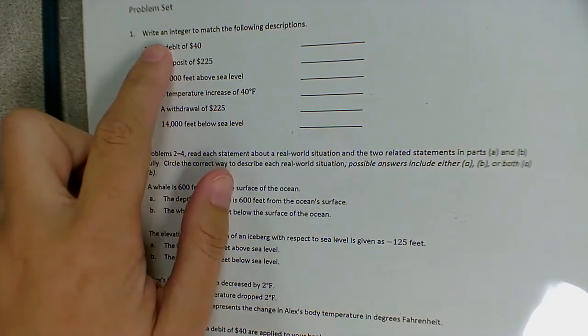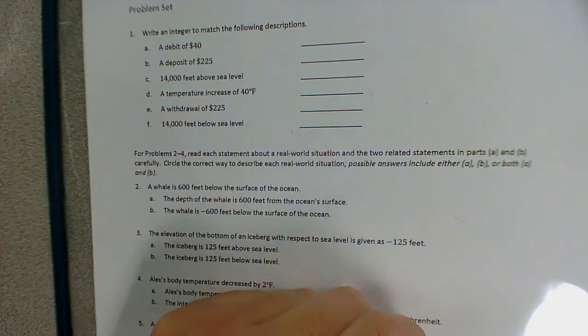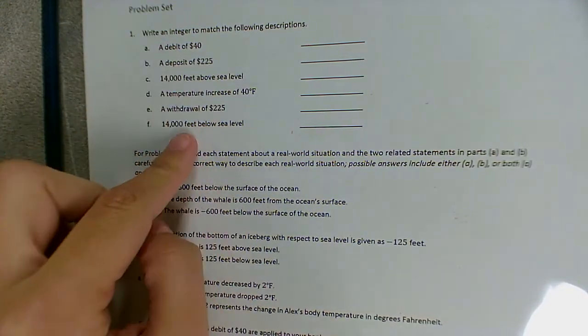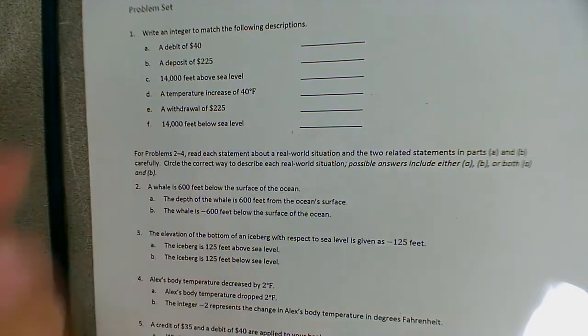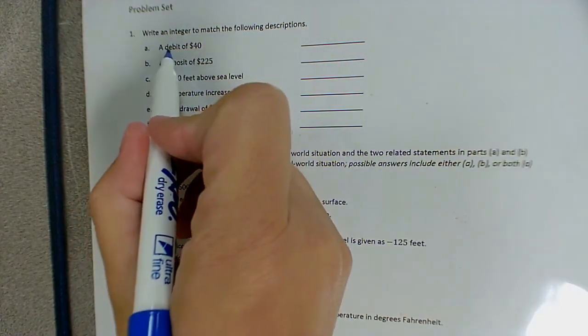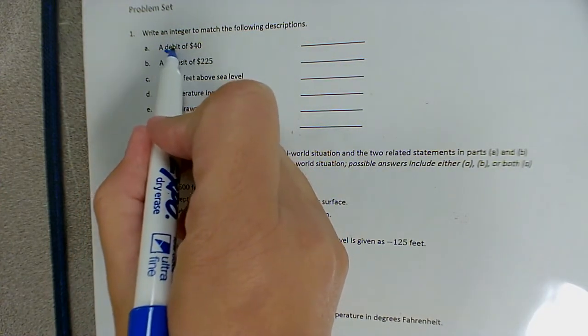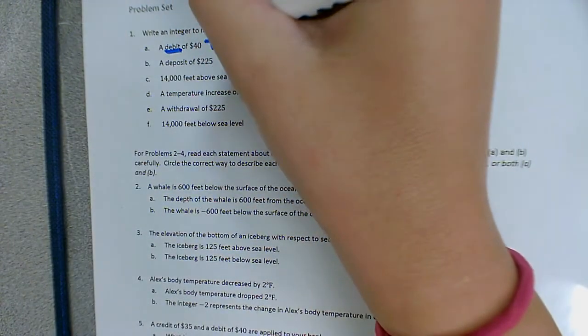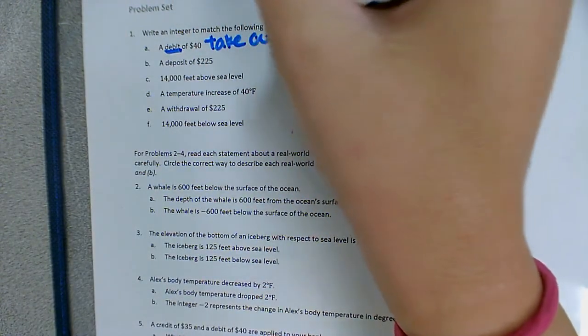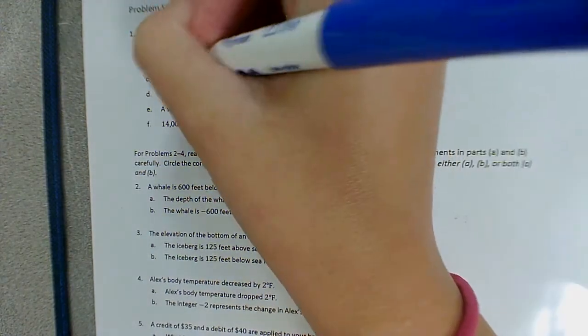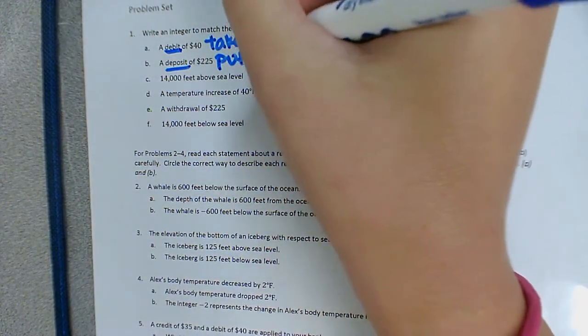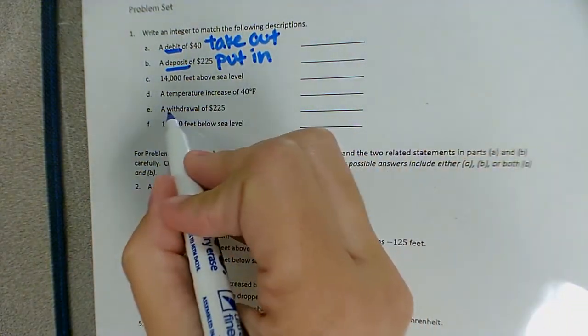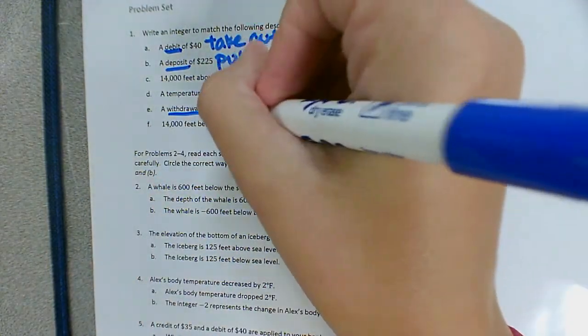So part one, you'll write an integer to match each description. So we have some banking words, we have some sea level words, and we have some temperature. So if you remember, from our previous lessons, debit means that we're taking out. A deposit means that we're putting something in. And again, a withdrawal means that we're taking out.